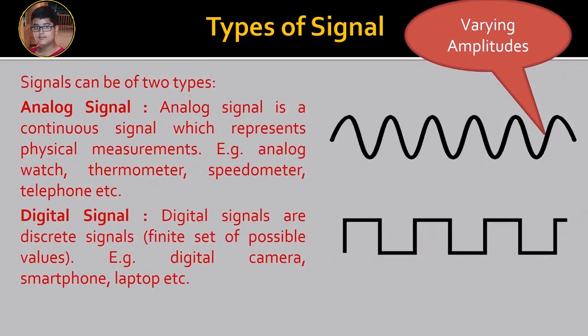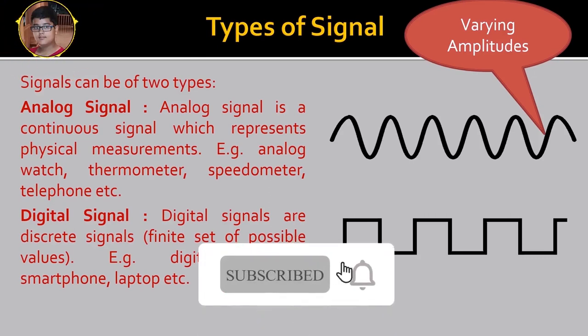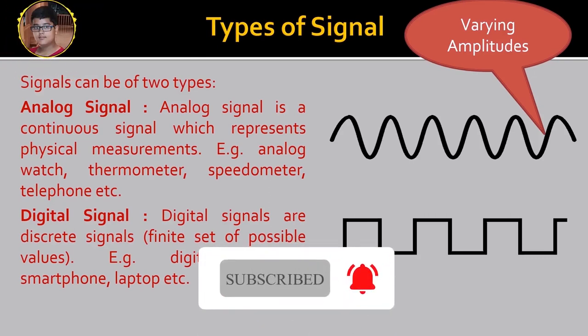Now the next is Digital Signal. The Digital Signals are Discrete Signals. These are a finite set of possible values. The examples are Digital Camera, Smartphone and Laptop. We can see that there is a jump from one point to another without traveling intermediate points between the two given points.